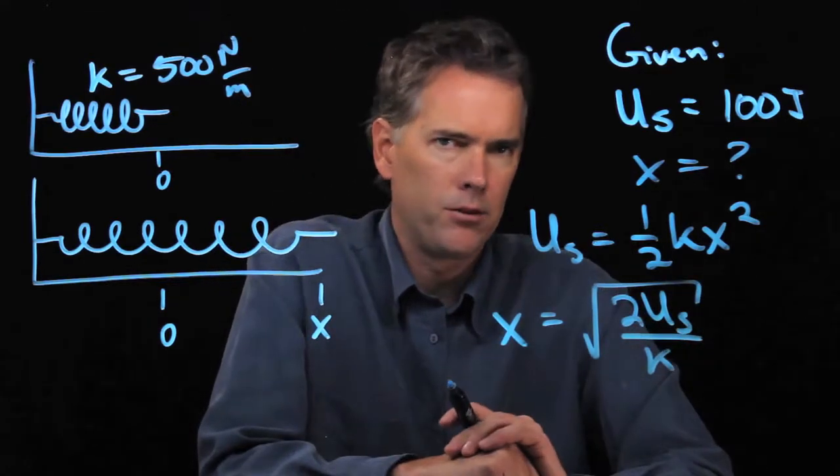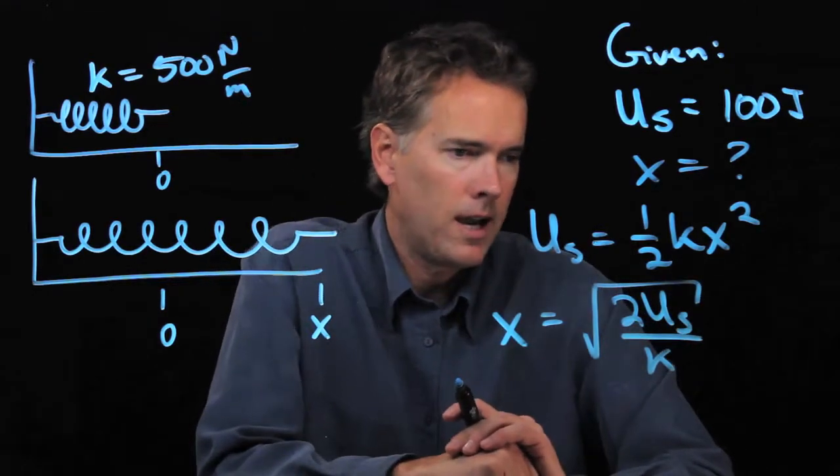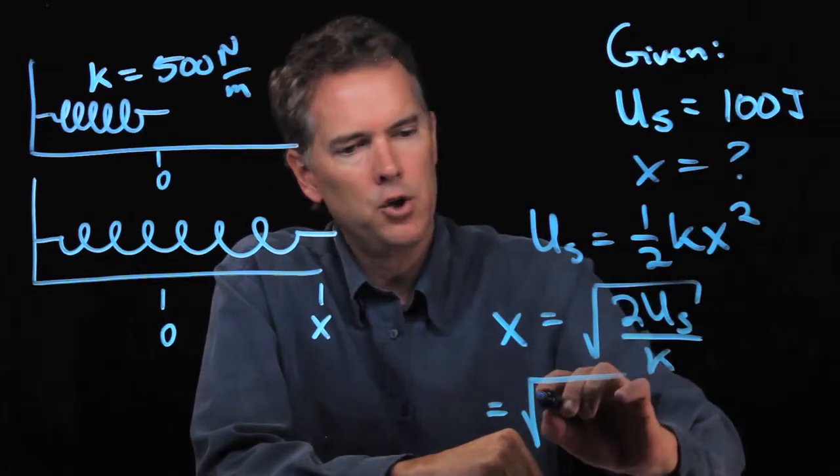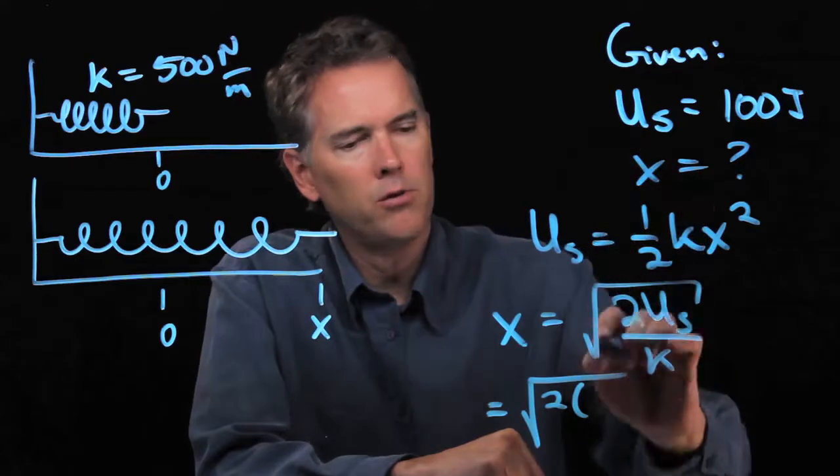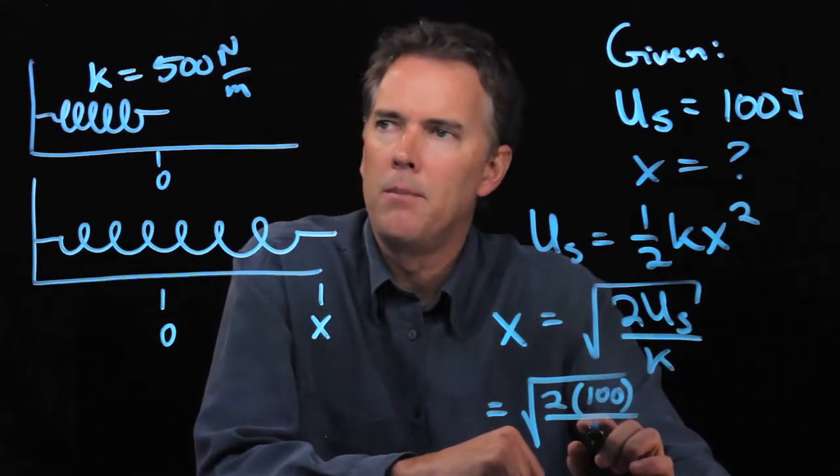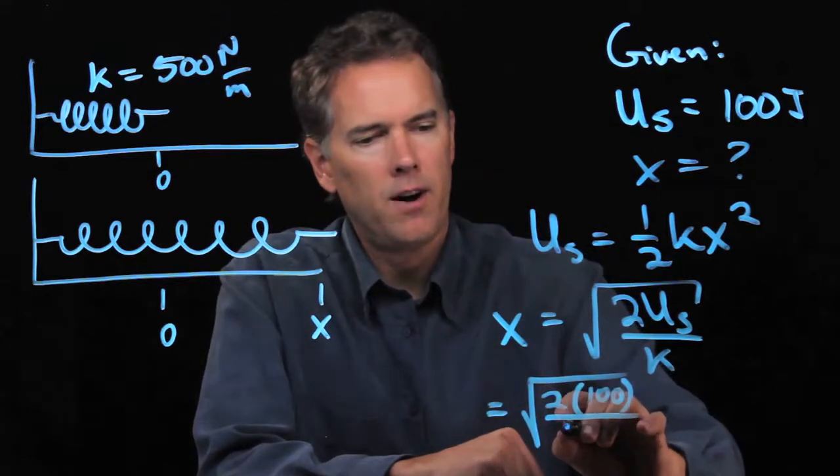Now I have all those numbers, so we've got 2 times U sub S which we said was a hundred, we're gonna divide by K which we said was 500.